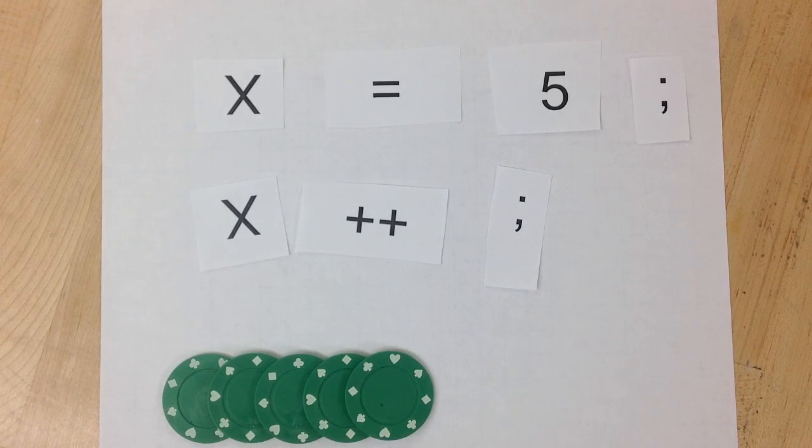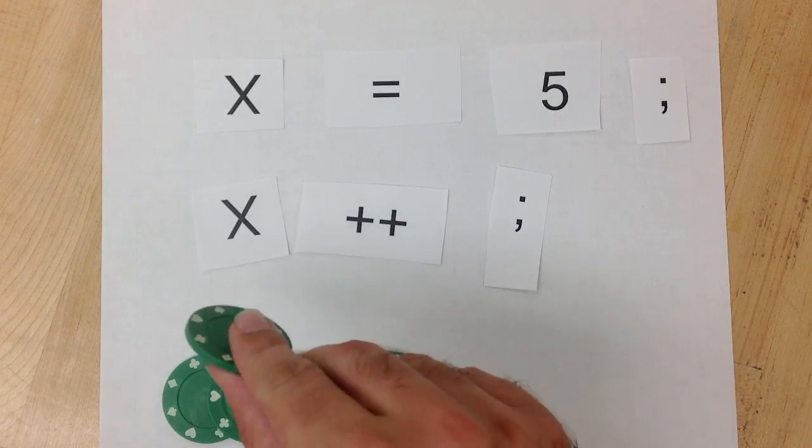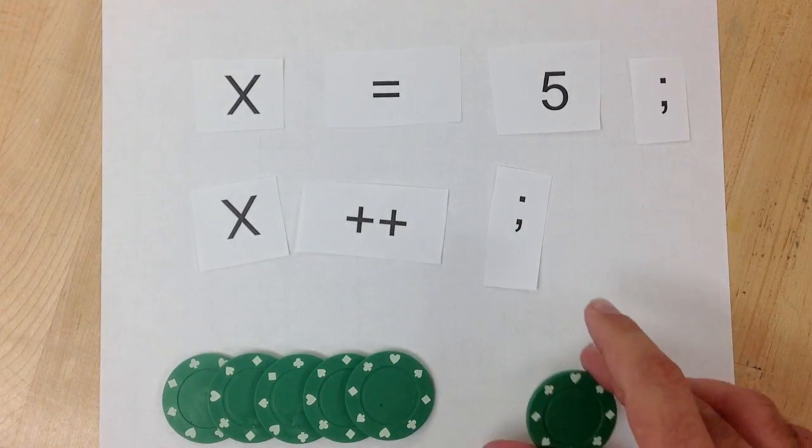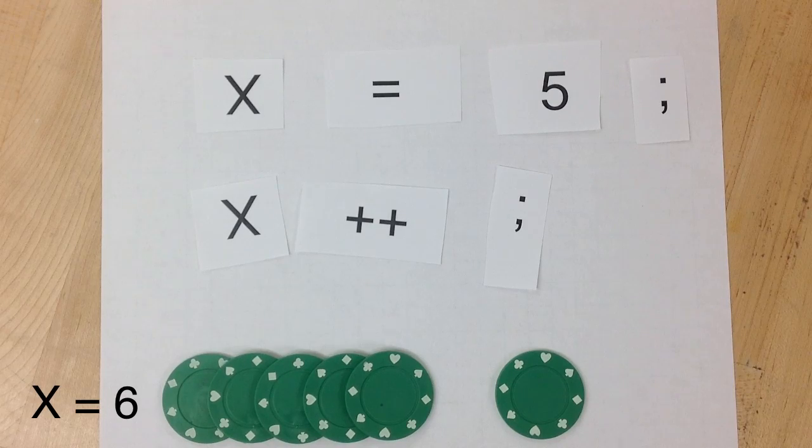So if we have this code, x starts out as 5, so I've got 5 chips. We say x++, we get to the end of the line, it's post-increment, we add one more chip, so now x is equal to 6.